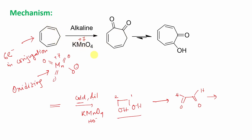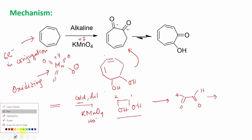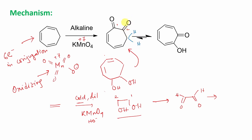So here, what will happen? First, one double bond will oxidize in the first step to the corresponding diol. I know it is a little difficult to draw a seven-membered ring, so practice at home. Then this diol is further oxidized to the corresponding 1,2-dicarbonyl compound — 1,2 because they are positioned adjacent to each other. Now look at this molecule carefully.